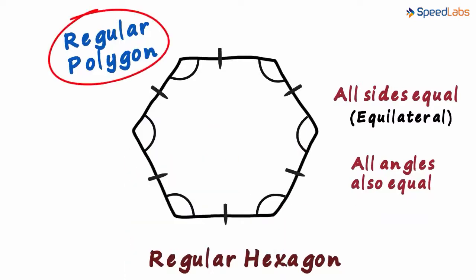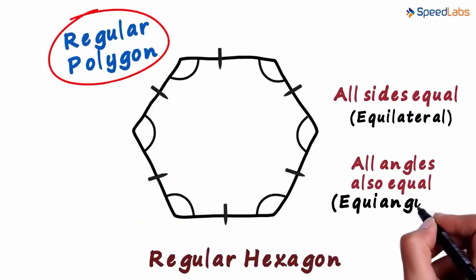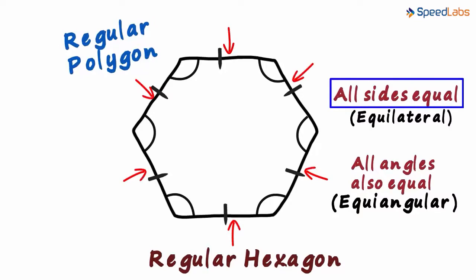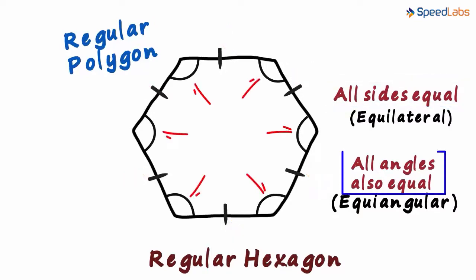It means that regular polygons are equi-angular. So remember, for a polygon to be regular, all its sides should be equal to each other and all its angles should also be equal to each other.